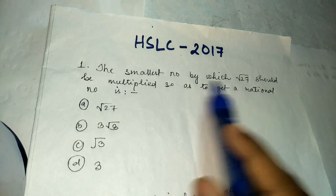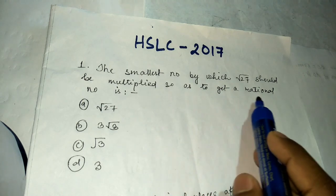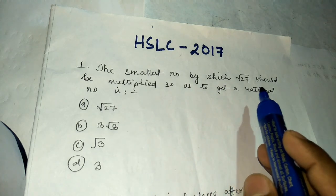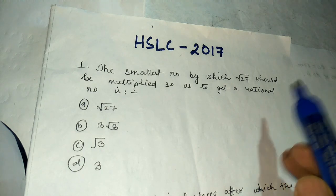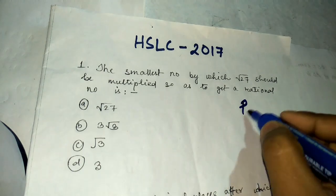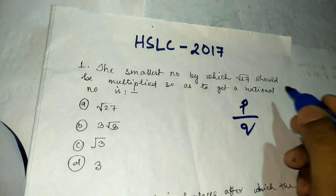Question number one: the smallest number by which root 27 should be multiplied so as to get a rational number. A rational number is one we can represent in the form of p by q. Root 27 cannot be expressed in that form.